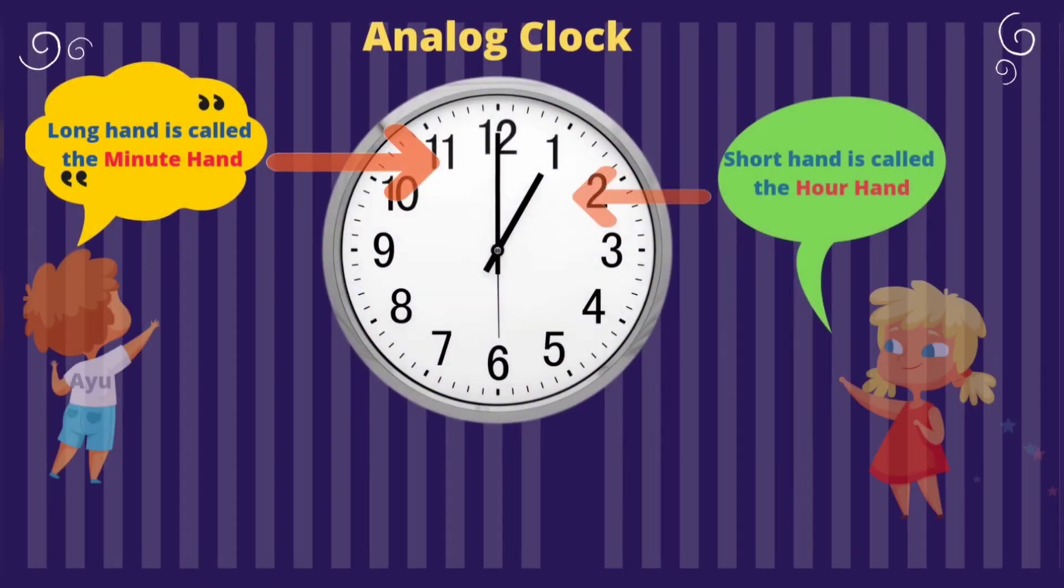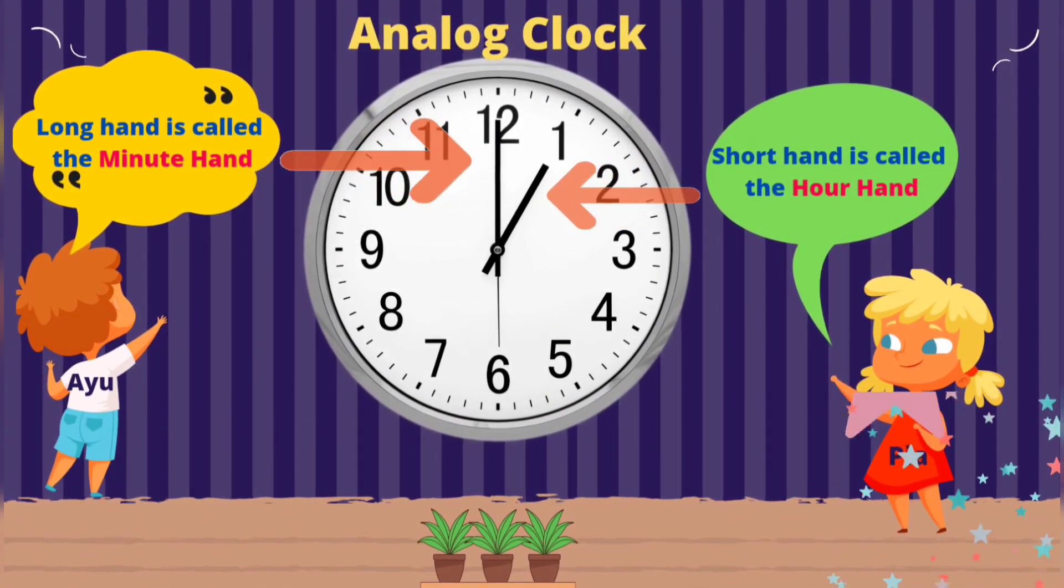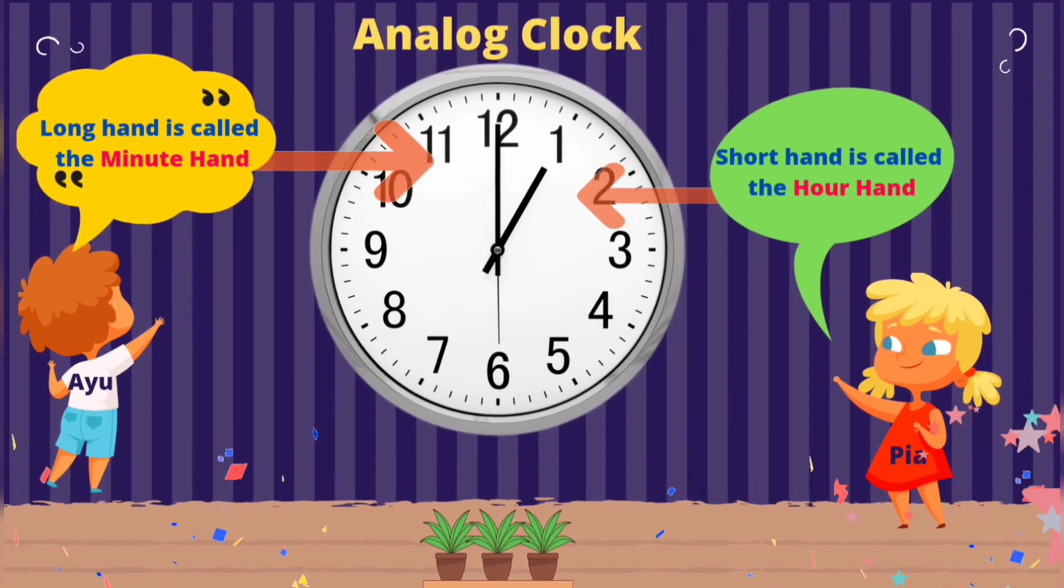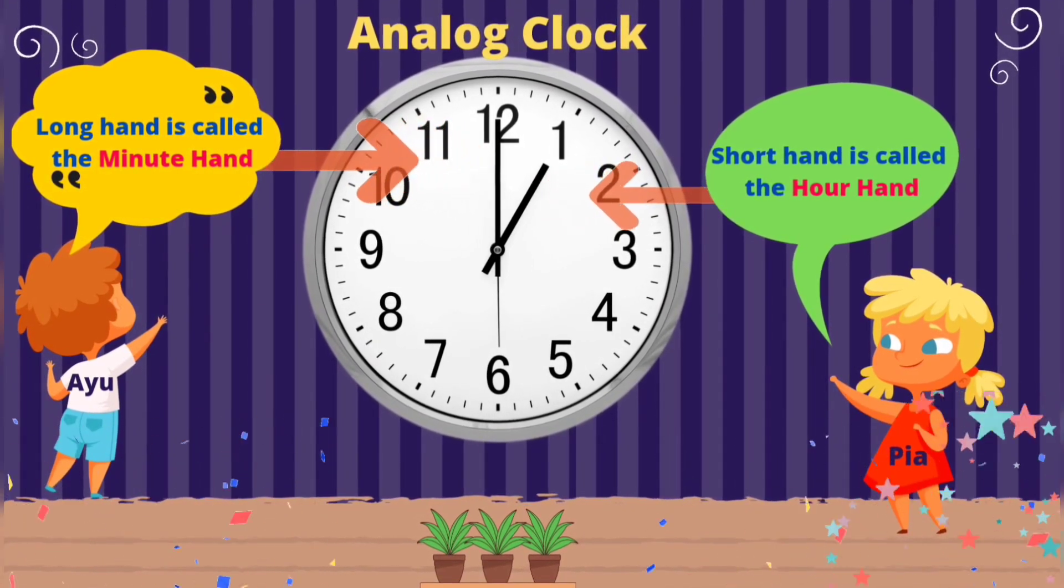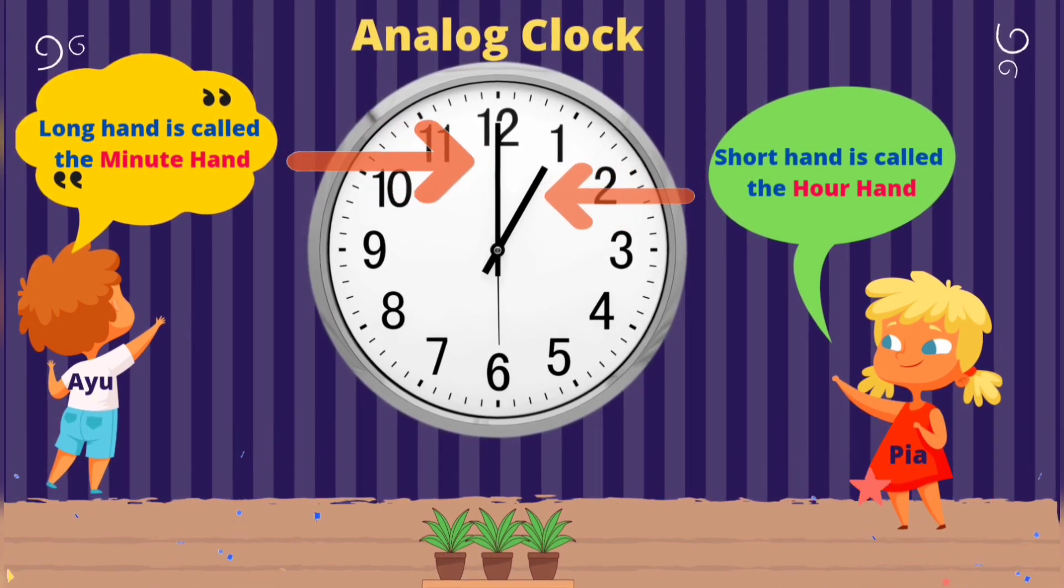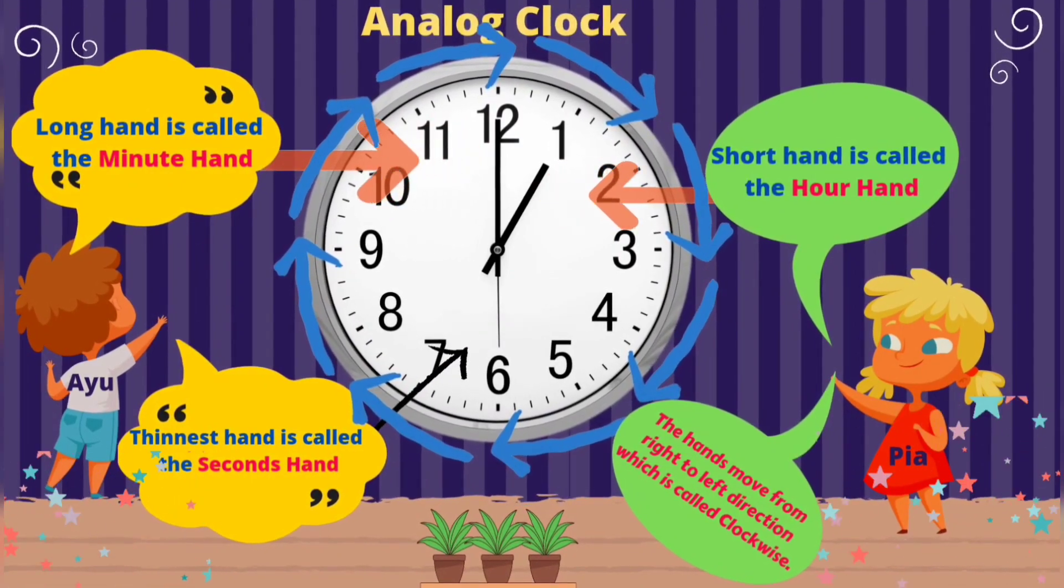Let's study an analog clock. Where Ayou and Pia are directing towards the hand for practicing. Long hand is called the minute hand. Short hand is called the hour hand. Thinnest hand is called the second hand.